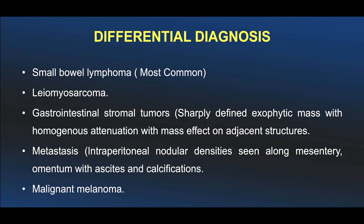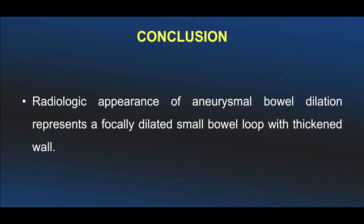Whenever you see a pattern of unusually dilated bowel loop, you should think about small bowel lymphoma as the first differential diagnosis, followed by leiomyosarcoma, gastrointestinal stromal tumors as in our case. Very rarely, metastasis and malignant melanoma can have a similar appearance. Pattern recognition is very important as it helps in narrowing the differential diagnosis.